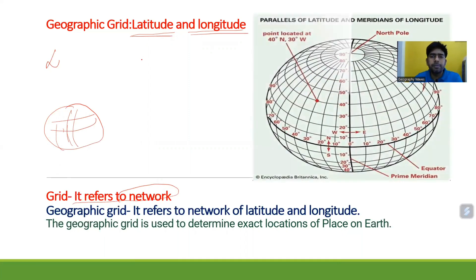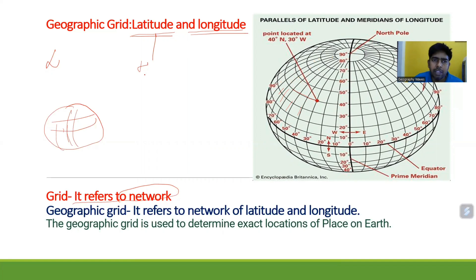Some lines run vertically and some lines run horizontally - you can see there is a network of latitude and longitude. Lines that run horizontally are known as latitude, and vertical lines that run on Earth's surface are known as longitude. Both are imaginary lines.